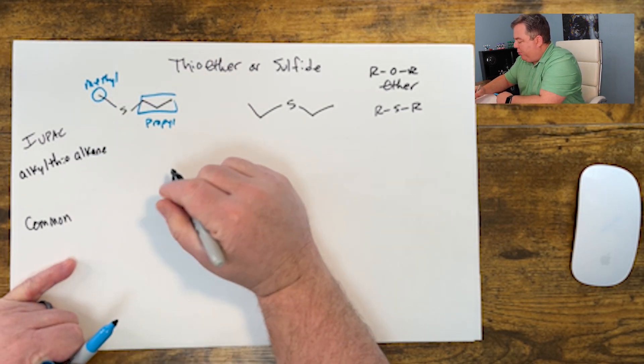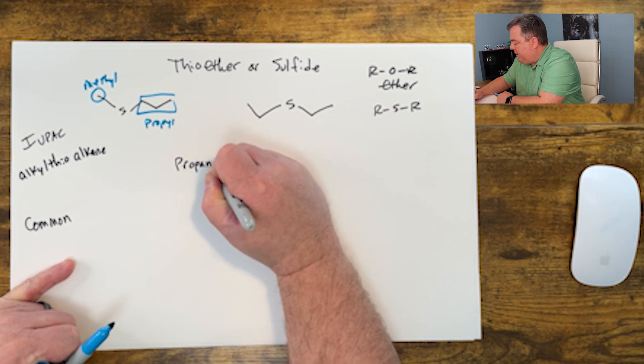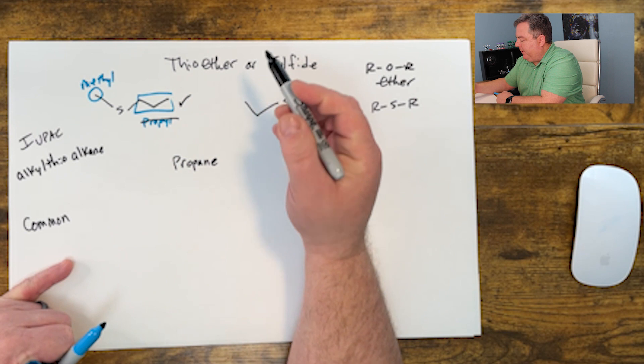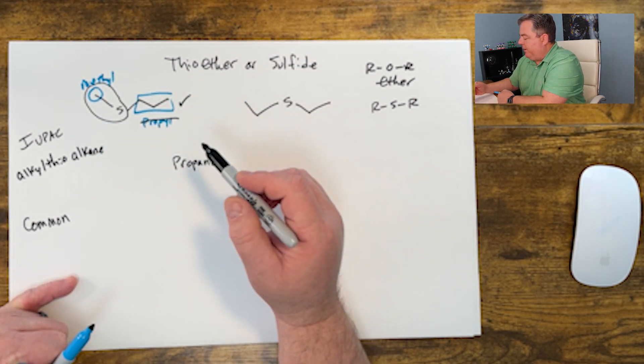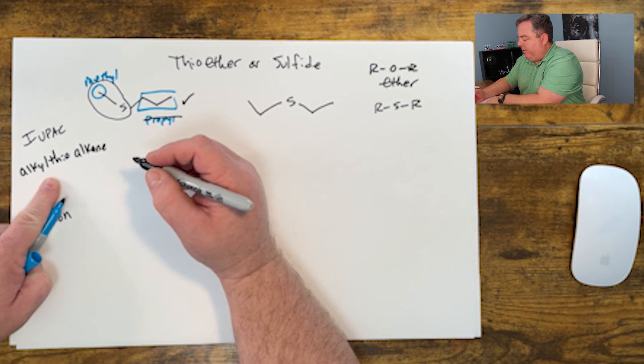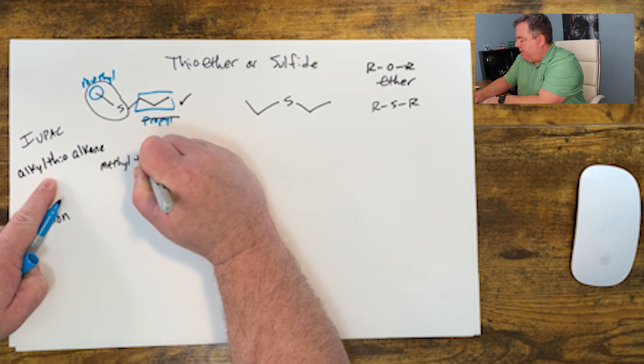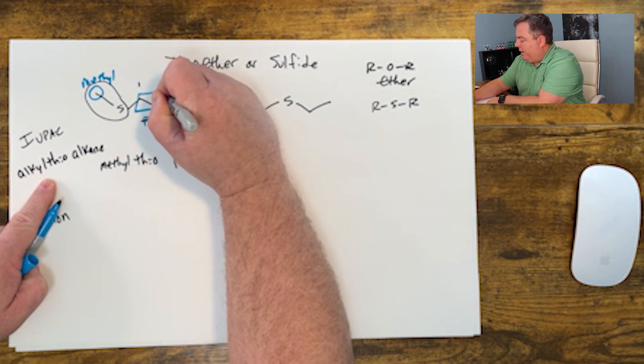Now I need to name the sulfur and the methyl part. That's called a methylthio group: methylthiopropane. That's on carbon one of the propane, so we can call it 1-methylthiopropane.